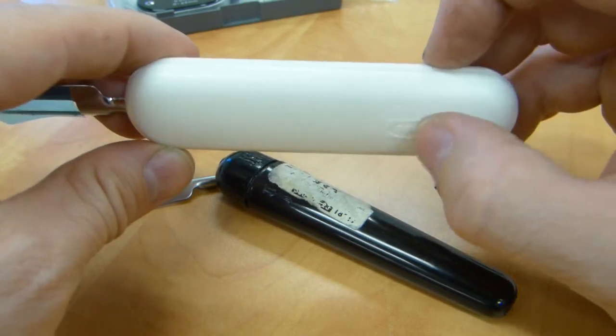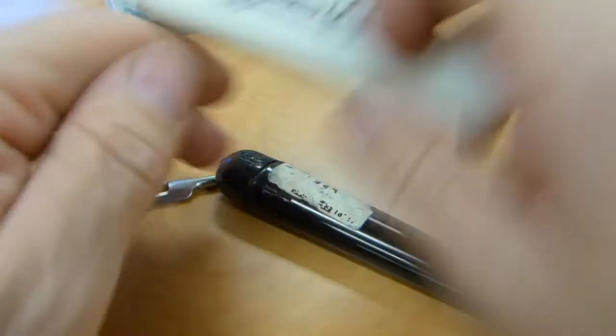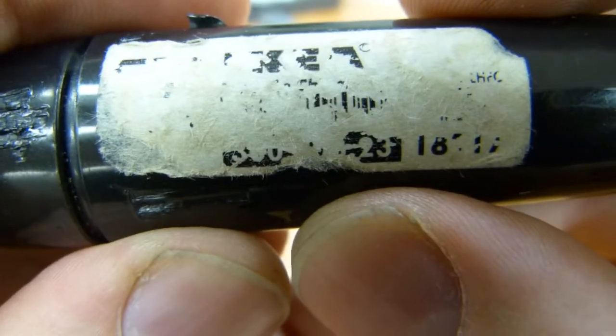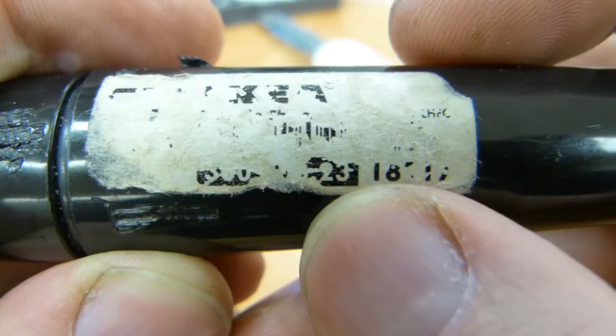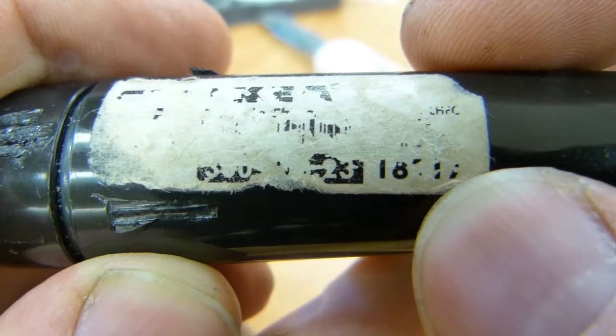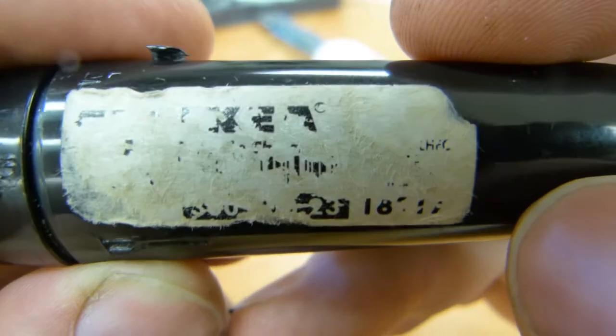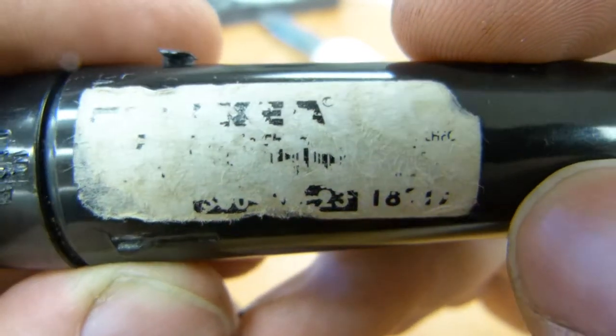It says IKEA on it with raised letters. The product numbers on the old one are still somewhat barely visible - 3 something, 0 something 23, 18, dot 17, so there, those are the numbers.